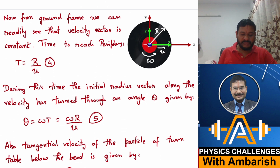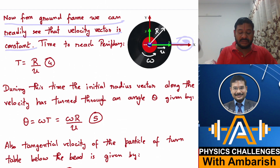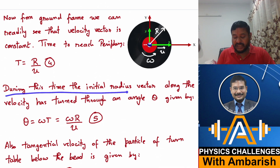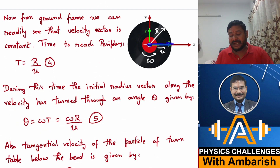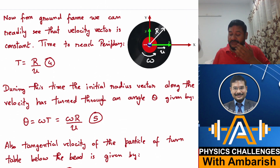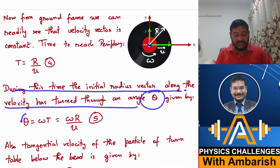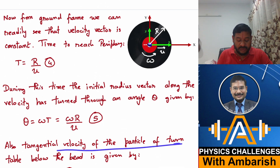From the ground frame, the velocity vector is constant — the bead goes straight. The time to reach the periphery is T = R/u. During this time, the initial radius vector along the velocity has turned through an angle θ = ωT = ωR/u, since the green x-axis has rotated by that angle.